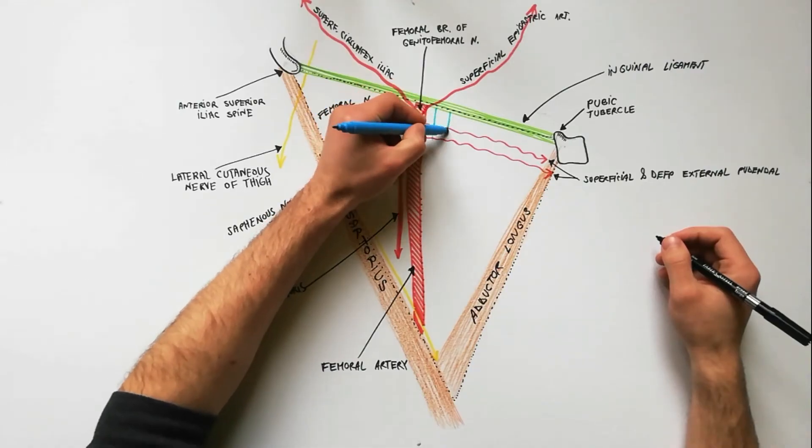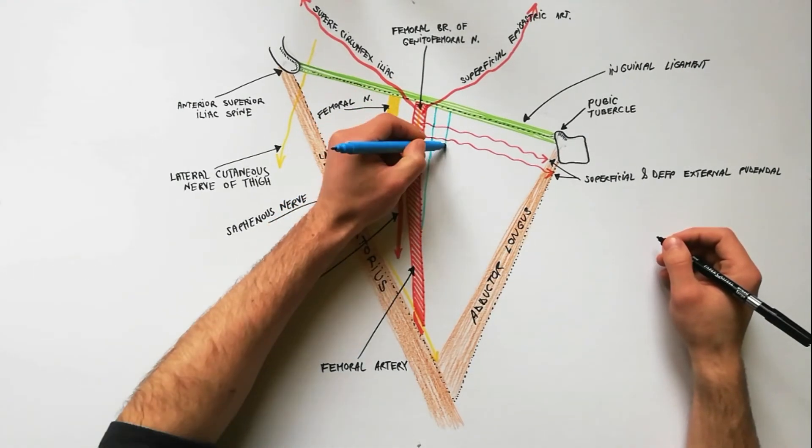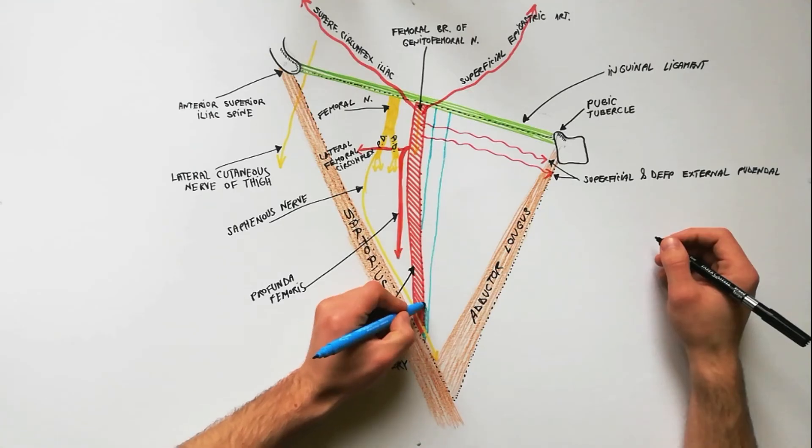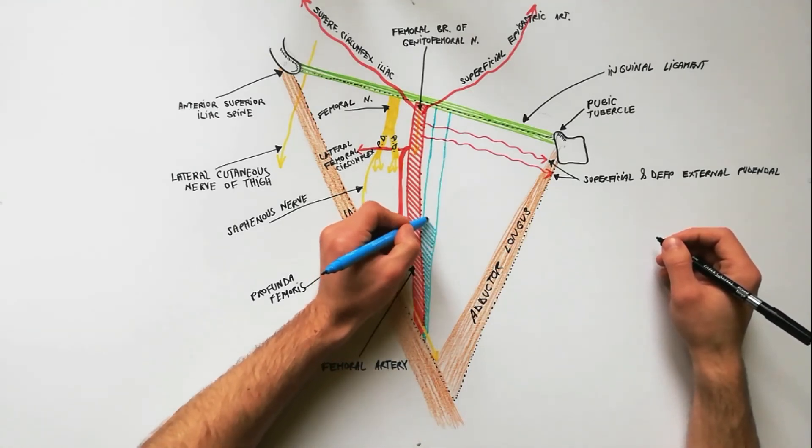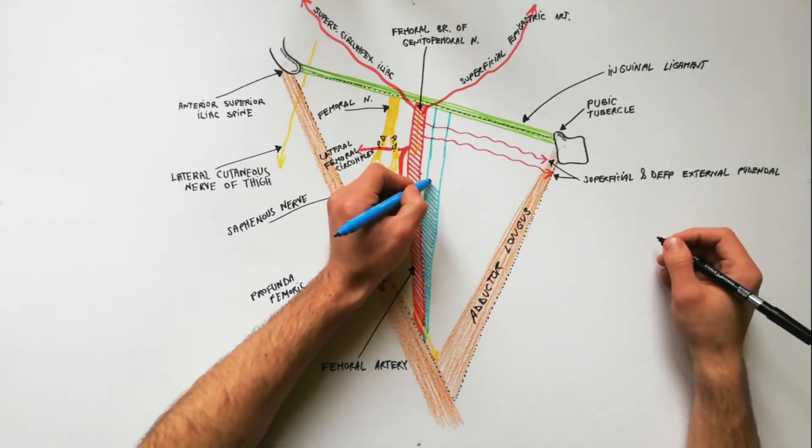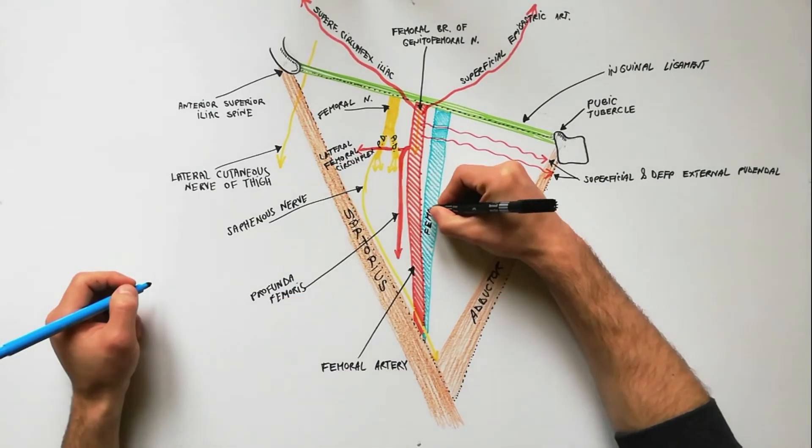The femoral vein lies medial to the femoral artery at the base of the triangle. But as it approaches the apex of the triangle, it lies posteromedially to the femoral artery.